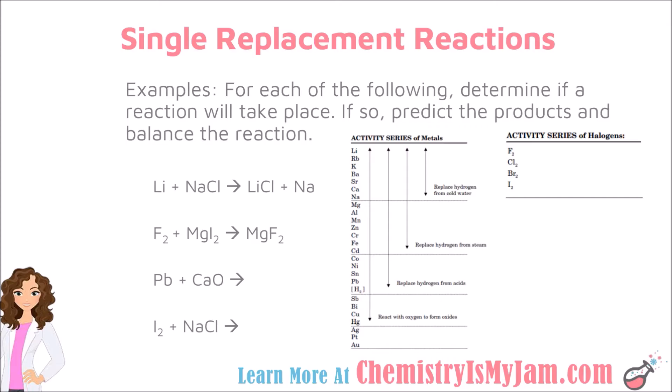This subscript did not come across the reaction — it came from crossing down your charges. Magnesium has a charge of plus two, and fluorine has a charge of minus one. You would cross those charges down to get MgF₂. The iodine was left over, so iodine is alone on the product side. Iodine has a subscript of two because iodine is a diatomic. So when you write your compounds, cross down your charges to get the subscripts, and when you write an element by itself, check if it is a diatomic. Confirm that the reaction is balanced, and it is.